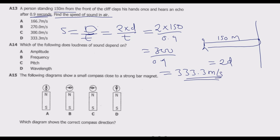This gives us 333.3 meters per second as our answer, so option D is the correct answer. The common mistake is using just 150 meters — only the one-way distance — and dividing by 0.9, which gives 166.7, option A, but that is not the correct answer. Make sure you understand what is happening.